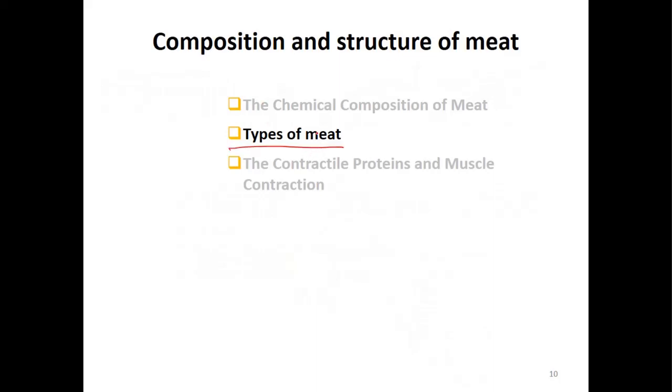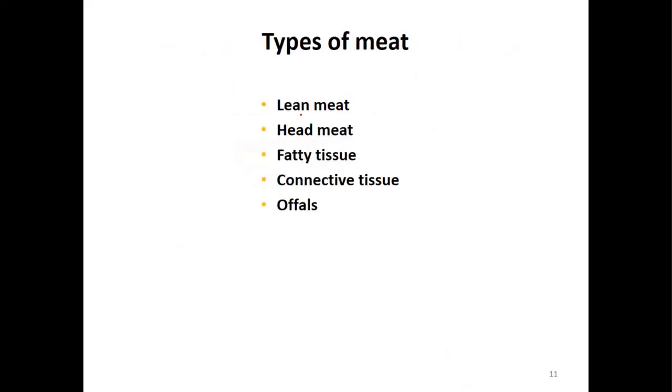Now we discuss different types of meat. When we slaughter an animal, these are the types of meat we get: lean meat, head meat, fatty tissue, connective tissue, and offals. Lean meat is the red meat.